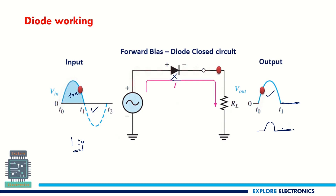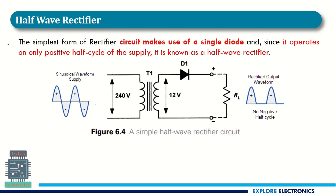This is used in the design of rectifiers. The half wave rectifier is the simplest form, making use of only a single diode. It is called a half wave rectifier because only half of one complete cycle appears in the output — the first half cycle is present and the second half cycle is discarded, giving zero output.